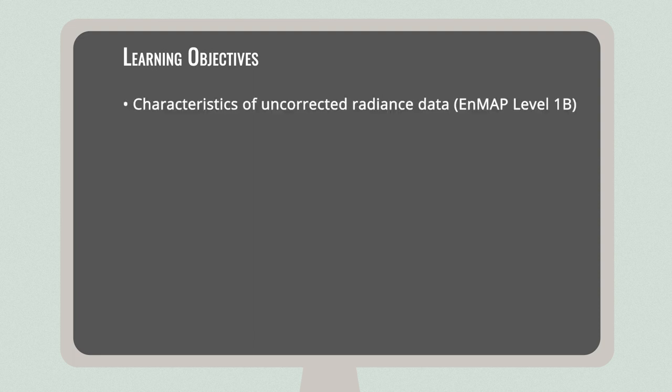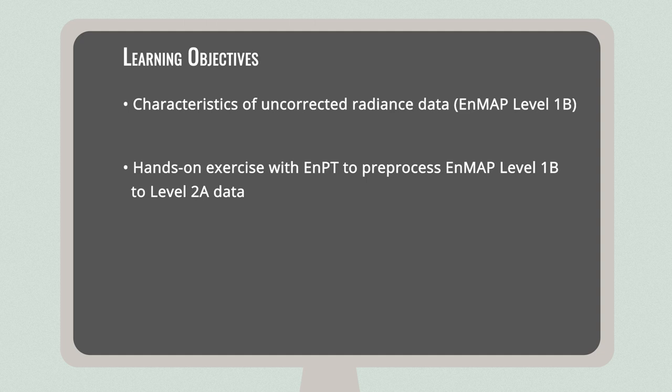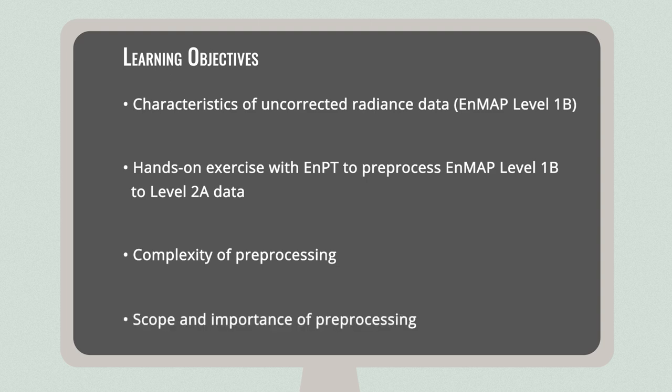You already know the theory of the different corrections applied during pre-processing. In this lesson, we will specifically look at the characteristics of NMAP level 1b data. Then we'll use the open-source software NPT within the NMAP box to process the data to level 2a — that is, atmospherically corrected and orthorectified bottom of atmosphere reflectance. Though operating the software is pretty simple, you'll get some insights into the complexity of pre-processing image data, and the observation of differences between level 1b and level 2a products might help you to fully understand the scope and importance of pre-processing.